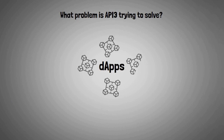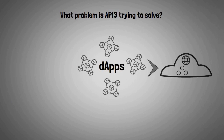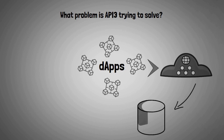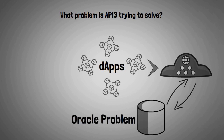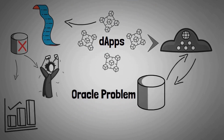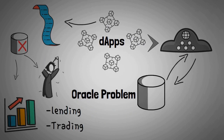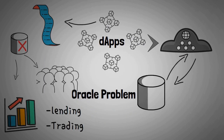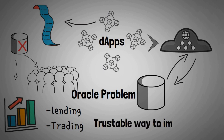So what problem is API3 trying to solve? dApps are becoming more and more popular, but there is a problem developing around how to integrate them with existing technology. Blockchains were built for different APIs than traditional ones used in cloud services or data centers, so they have trouble communicating between the two. This issue has been called the oracle problem. Since most dApps are operated via smart contracts, invalid data can lead to disastrous downstream consequences, especially in financial services such as lending or trading. These corrupted data imports could raise a significant threat to users' assets.